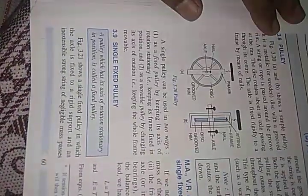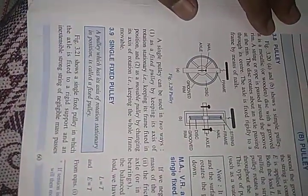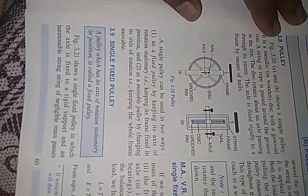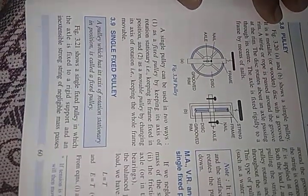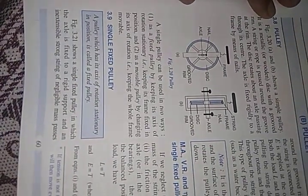This pulley is divided into two parts: single fixed pulley and movable pulley. Single fixed pulley means its axle — its axis of rotation — is fixed, and it rotates on that fixed axis. A pulley which has its axis of rotation stationary in position is called a fixed pulley.